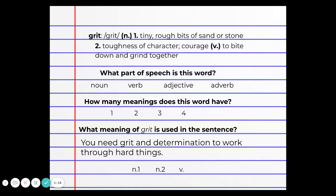So we could think of what part of speech is this word? Well the parentheses indicate that it is a noun and it's also a verb, so in this case we would circle noun and verb.